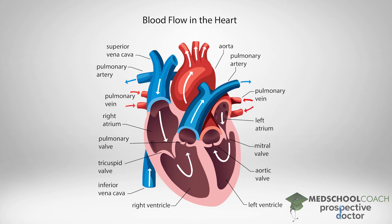From the right atrium the blood is pumped into the right ventricles, passing through what is called the right atrial ventricular valve or the tricuspid valve. The heart has a number of valves to prevent backflow of blood. When the ventricles contract, the right AV valve or tricuspid valve prevents the blood from moving back from the right ventricles into the right atrium.